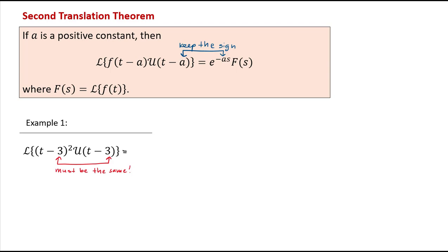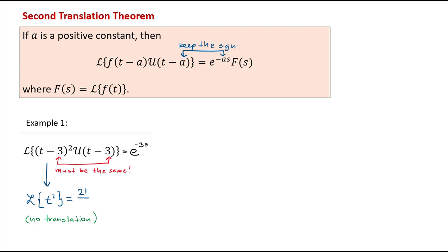Unlike the first translation theorem, here we keep the sign, so we write e to the power negative 3s. Then we multiply by the Laplace transform of the original non-shifted function — the Laplace transform of t². To get that, we just remove the minus 3, which equals 2 factorial over s³. So the final answer is e to the power negative 3s times 2 factorial over s³, which is 2/s³ · e^(−3s).